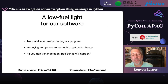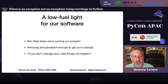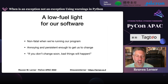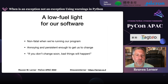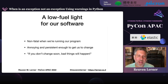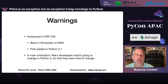In any event, what we would sometimes like and need is a low fuel light for our software. We don't want something that's going to crash our program. We do want it to be annoying. We do want it to be persistent so it'll get us to change — or, if we are the ones who have written the software, that it'll get our users to change. We want the software equivalent of 'if you don't change soon, bad things will happen.' And so, what I'm talking about in this talk is warnings.